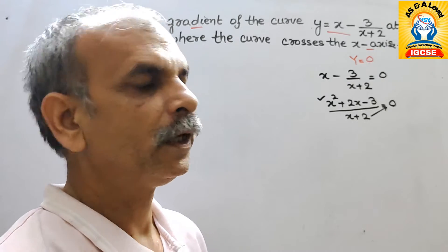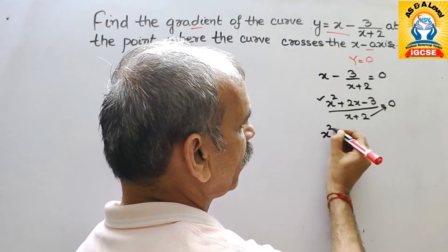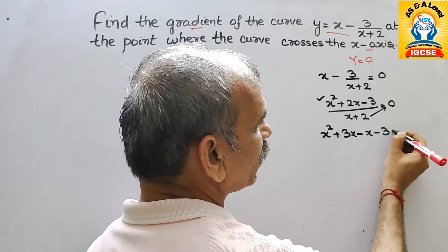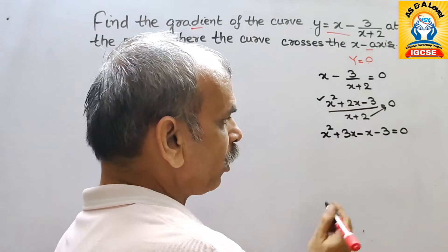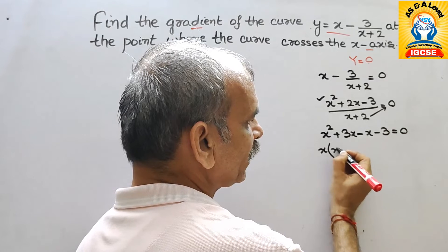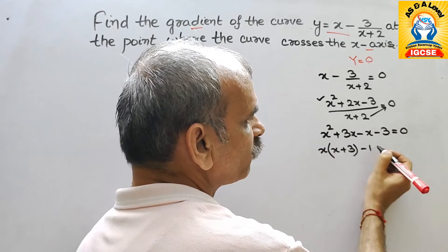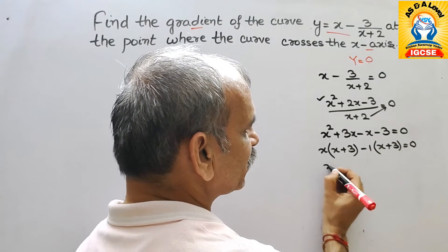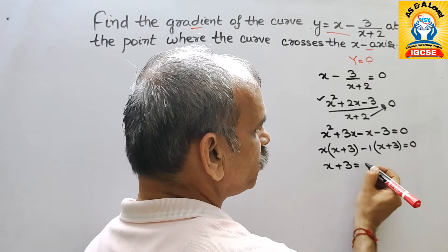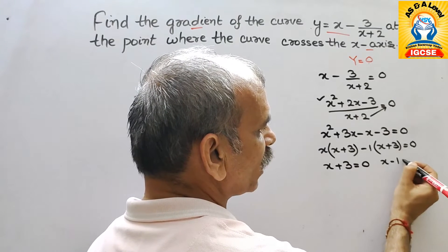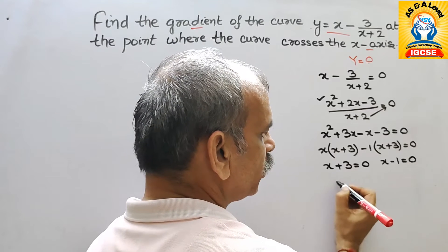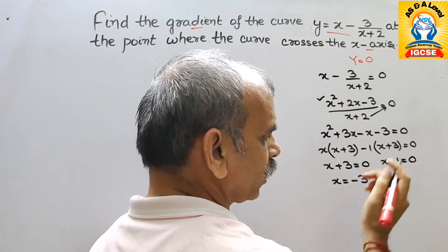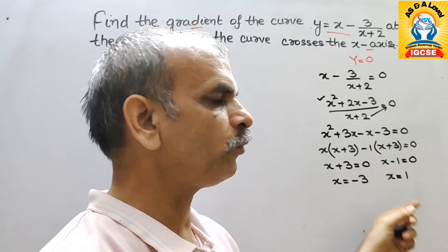Splitting the middle term: x² + 3x - x - 3 = 0. Factoring: x(x+3) - 1(x+3) = 0, giving (x+3)(x-1) = 0. So x = -3 or x = 1. We got two values of x.